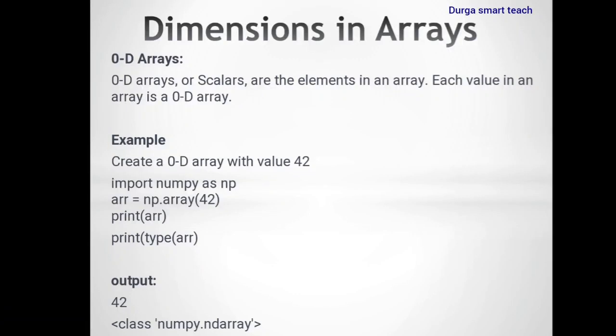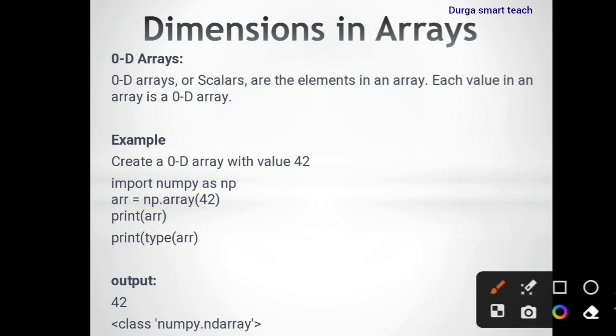Hello students, welcome to my channel. Today I am going to discuss about dimensions in arrays — dimensions in numpy arrays in Python. So dimensions are 4 types in arrays: 0 dimension, 1 dimension, 2 dimension, and multi-dimensional.